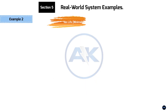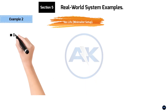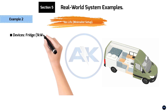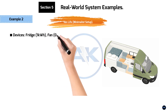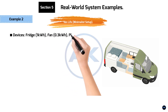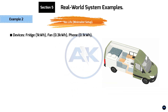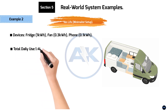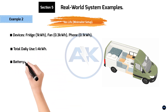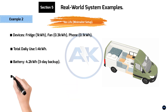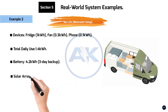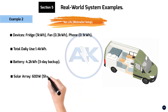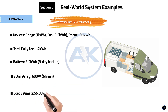Example 2: Van life minimalist setup. Devices — fridge: 1 kWh. Fan: 0.3 kWh. Phone: 0.1 kWh. Total daily use: 1.4 kWh. Battery: 4.2 kWh (3-day backup). Solar array: 600 watts (5 hours sun). Cost estimate: $4,000–$6,000.